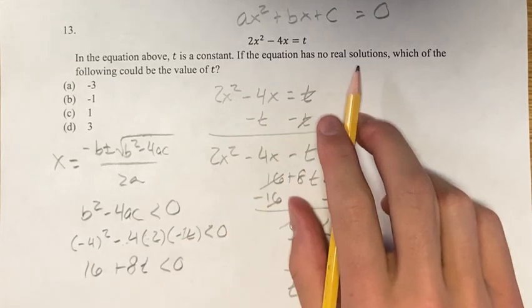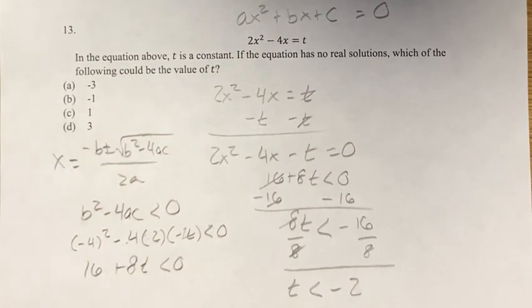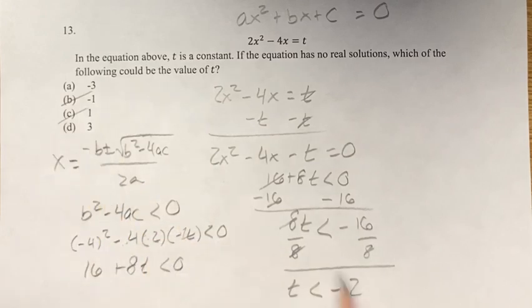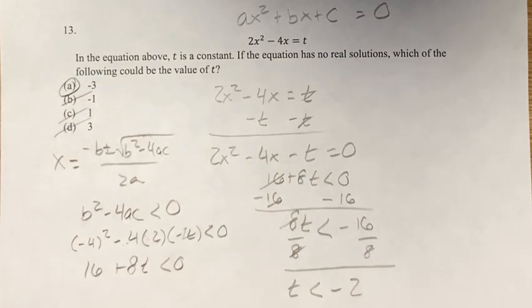For this equation to have no real solutions, t must be less than negative 2. And if you look at these four options, negative 1 is greater than 2, 1 is greater than 2, and 1 is greater than negative 2, 3 is greater than negative 2. The only one less than negative 2 is a, which is negative 3, which is going to be your final answer.